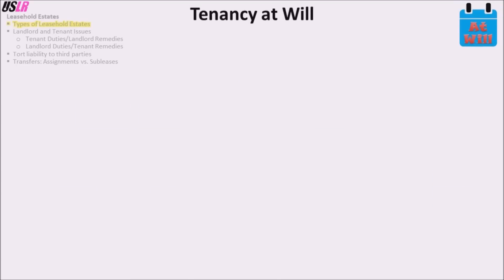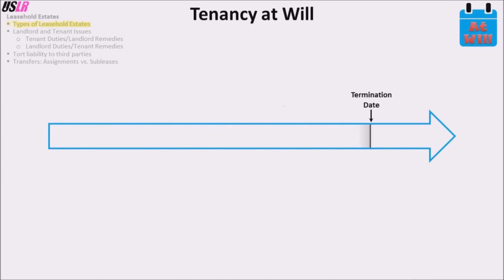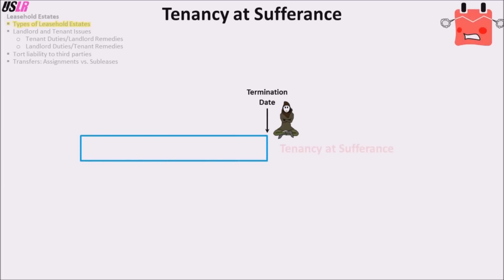The tenancy at will is a leasehold which does not have an end date, and the landlord and tenant may terminate the tenancy at any time with reasonable notice. Note that the words 'at will' are misleading because reasonable notice is still required. The tenancy at sufferance is the situation where the lease has ended and the tenant has not moved out. In this situation the tenant is called the holdover tenant. The court considers the tenancy at sufferance a leasehold to provide a way for the landlord to recover rent from the holdover tenant. Note that a trespasser does not have possession, but a tenant at sufferance enjoys possession of the property.